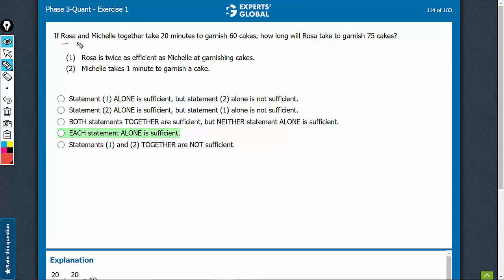The two girls together take 20 minutes to garnish 60. How long will the first girl take to garnish 75? So, one equation is given in the question that R and M garnish 3 cakes per minute.